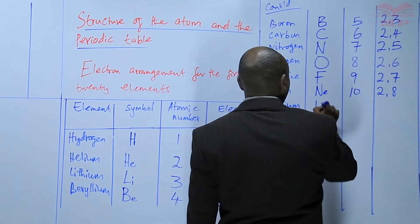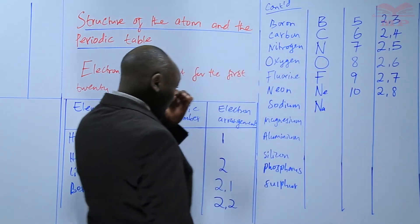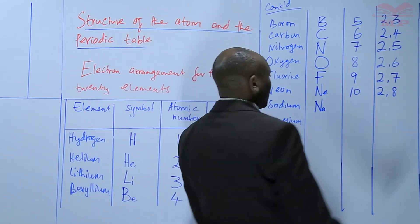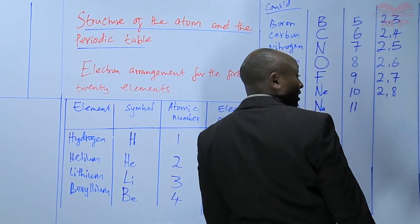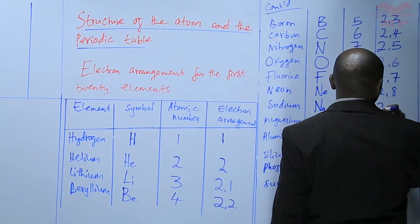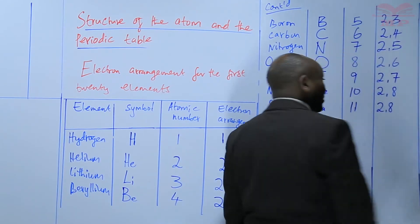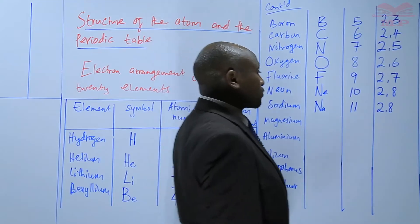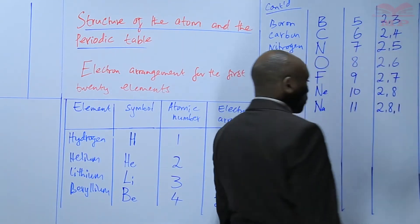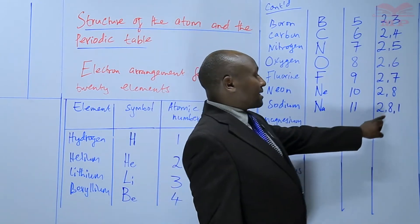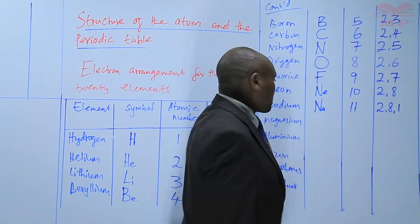Sodium - Na. It's only the first letter that is capital, the other letters are small. Atomic number 11, so 11 electrons. Arrangement: 2 in the first energy level, 8 in the second energy level - that is the maximum. So the remaining one electron is pushed to the third energy level. The second energy level carries a maximum of 8; more electrons are then pushed on to the next.